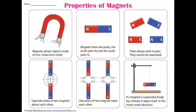In the first picture, the magnets attract objects made of iron, nickel, and cobalt. There are many materials which are attracted by magnets — iron, nickel, and cobalt metals, or things made with them, are attracted very easily.